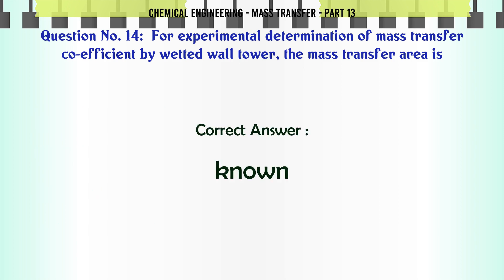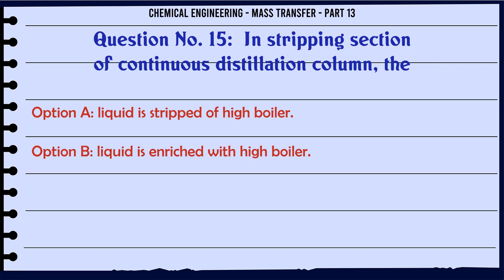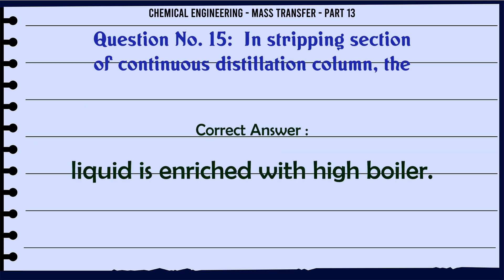In the stripping section of a continuous distillation column, the: A. Liquid is stripped of high boiler. B. Liquid is enriched with high boiler. C. Vapor is stripped of low boiler. D. None of these. The correct answer is: Liquid is enriched with high boiler.